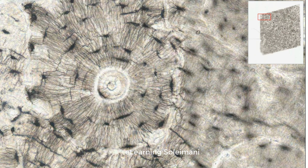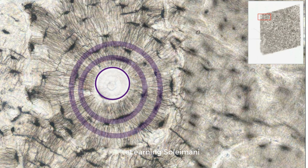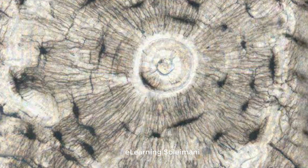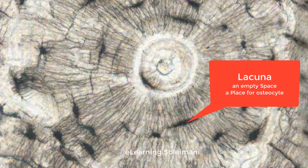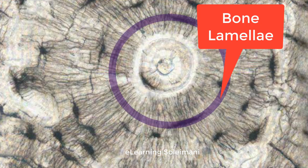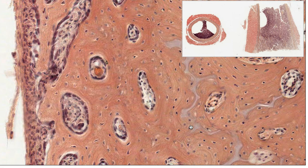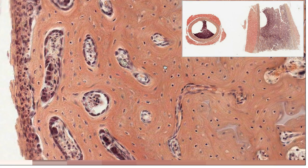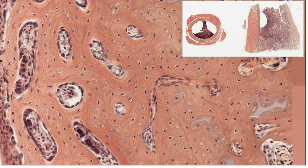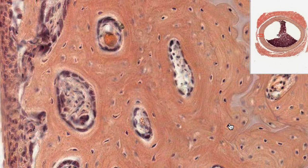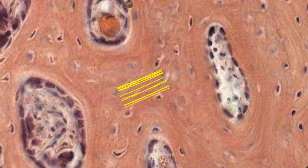Here you can see a Haversian system including the Haversian canal, circles of osteocytes, and their canaliculi, which are small channels containing extracellular fluid. The Haversian systems have varying sizes of canals, and there is another canal named Volkmann's canal that interconnects them. Between the Haversian systems there are interstitial lamellae.